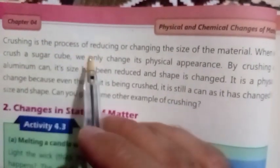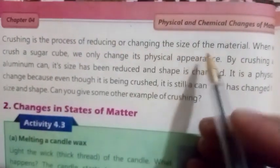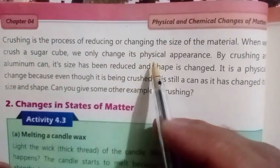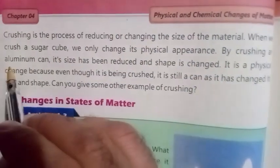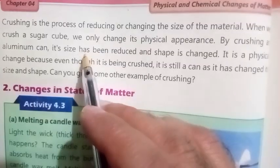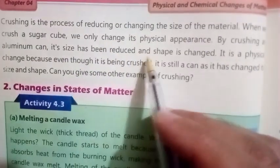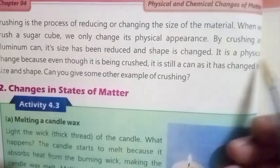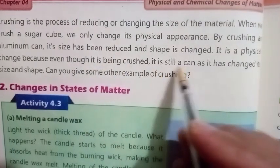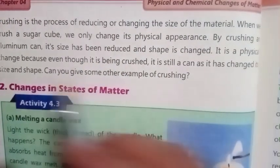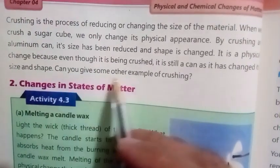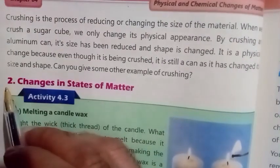Crushing: crushing is the process of reducing or changing the size of a material. When we crush a sugar cube, we only change its physical appearance. By crushing an aluminium can, its size has been reduced and its shape is changed. It is a physical change because even though it is being crushed, it is still a can — it has changed its size and shape. Can you give some other example of crushing?